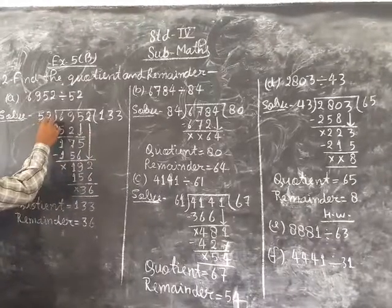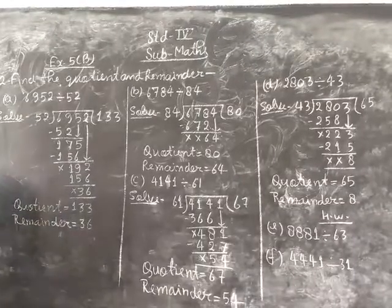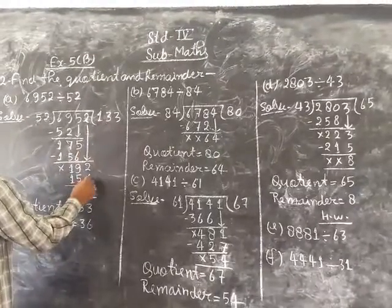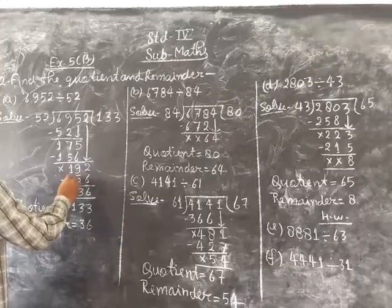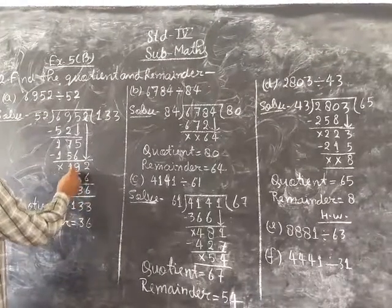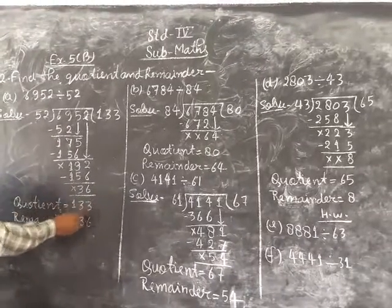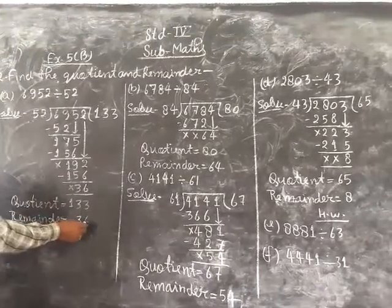192. 52 divided by 192. 52, 3 times 1, 156. Minus 3, 1, bring down 2, 12 minus 6, 6. 8 minus 5, 3. 1 minus 1, 0. So quotient equal to 153 and remainder equal to 36.